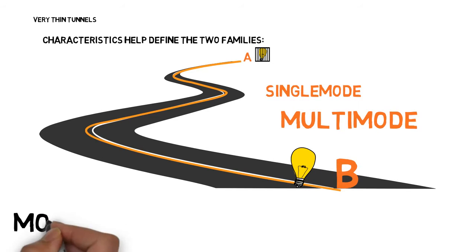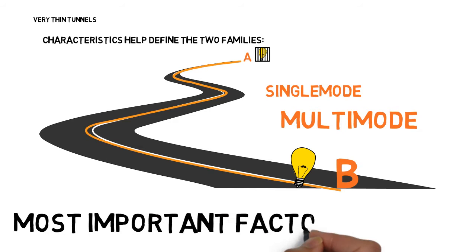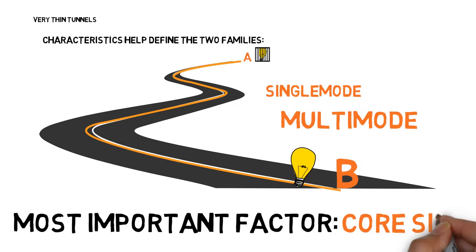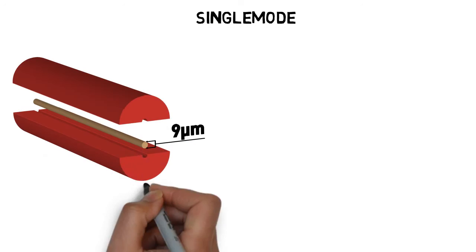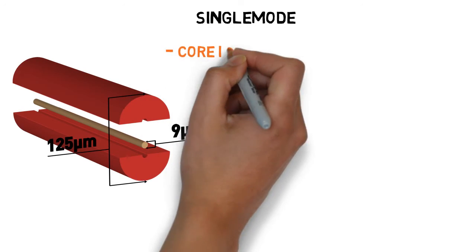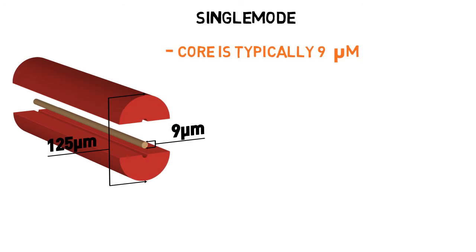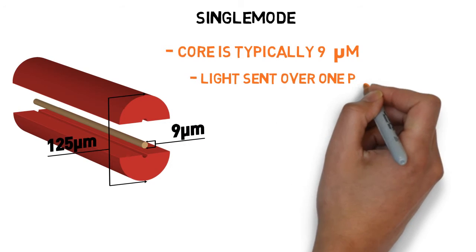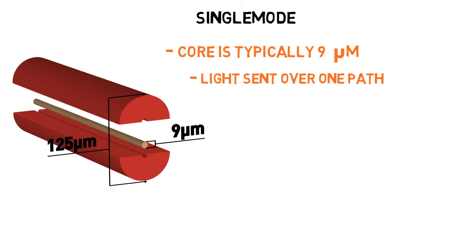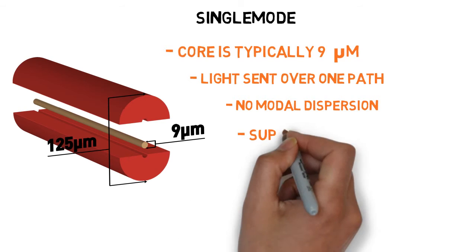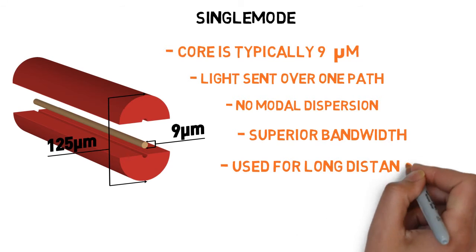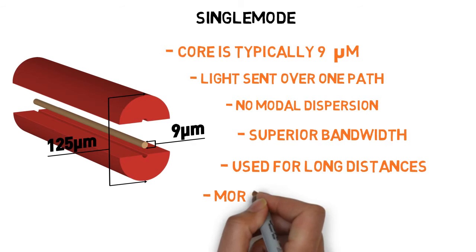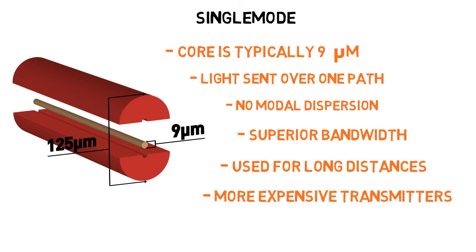The key determinant of which family a fiber belongs to is the size of its core. Single mode fibers are distinguished by their 9 micron diameter cores. The relatively small core allows room for only one light signal to be transmitted at once, which makes single modes immune to modal dispersion. They are able to handle higher bandwidths and are used for long distance applications. The transmitters they are compatible with are usually more expensive.